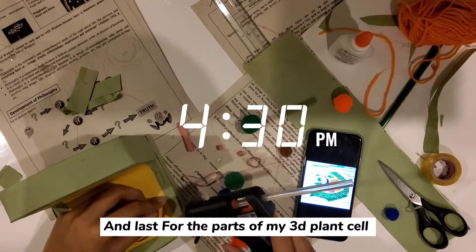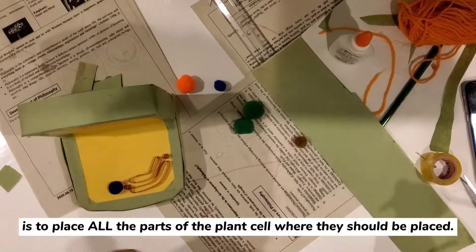And last for the parts of my 3D plant cell is to place all the parts of the plant cell where they should be placed.